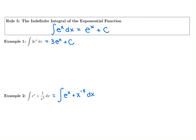Now we're ready to take the antiderivative of each piece. The antiderivative of e to the x is e to the x, and then we have the antiderivative of x to the negative 5. So we're going to add 1, put it in the denominator, put it up top. So we'll have 1 over negative 5 plus 1, which is negative 4, giving us x to the negative 4 plus C.